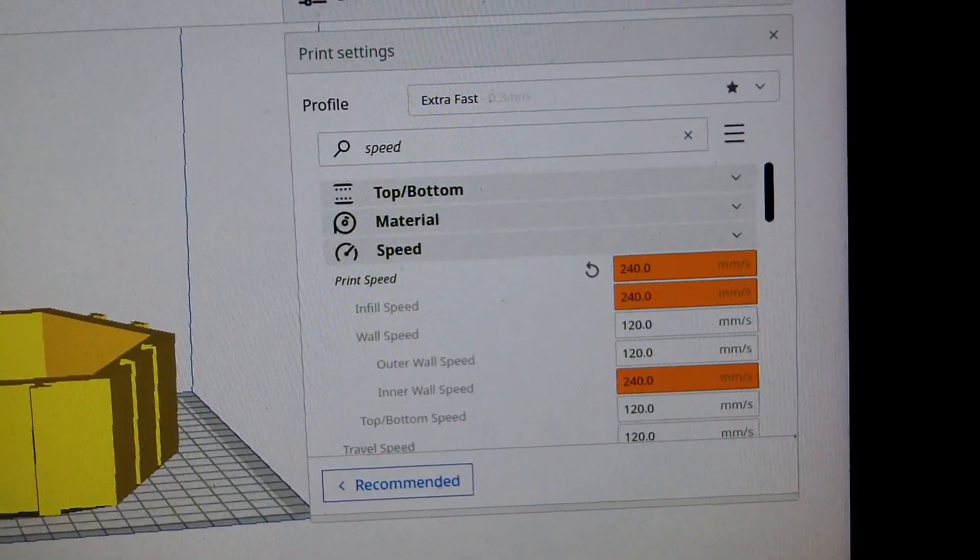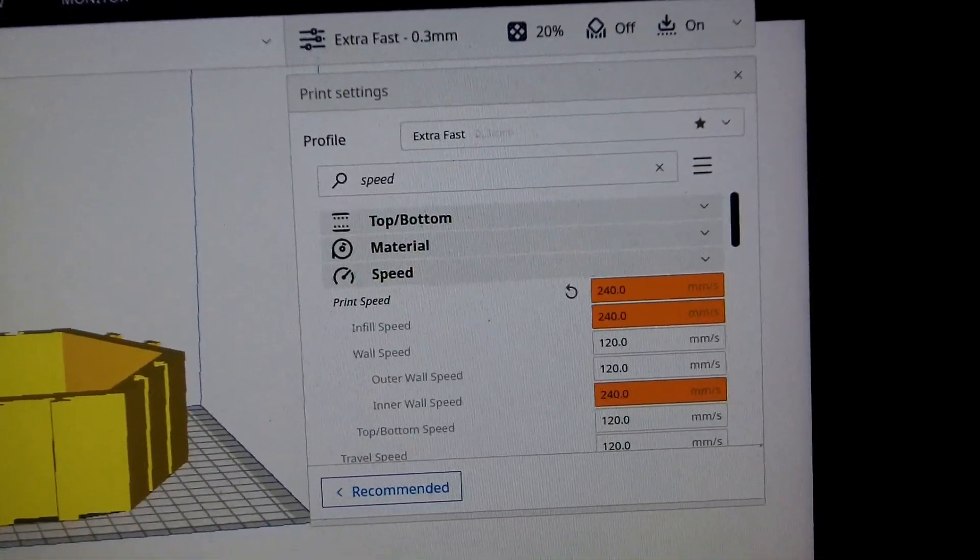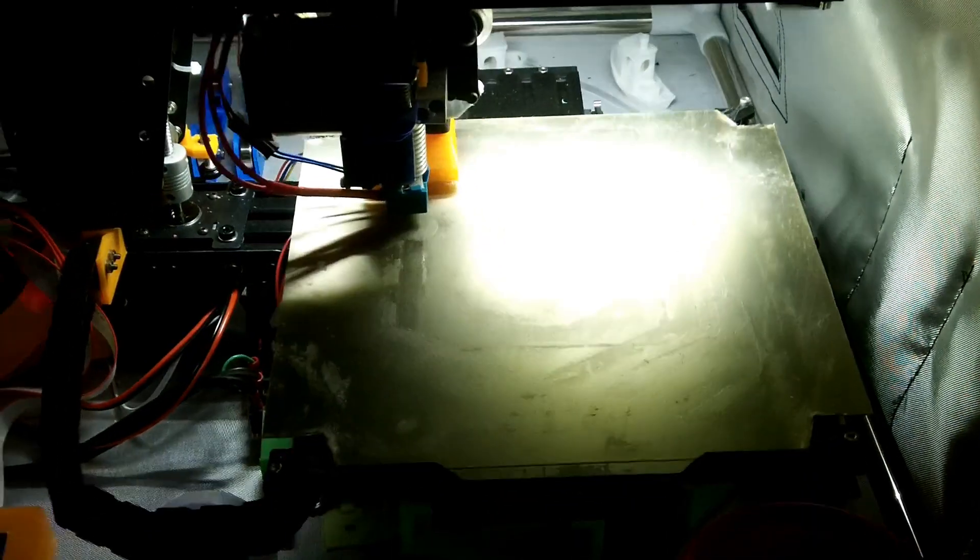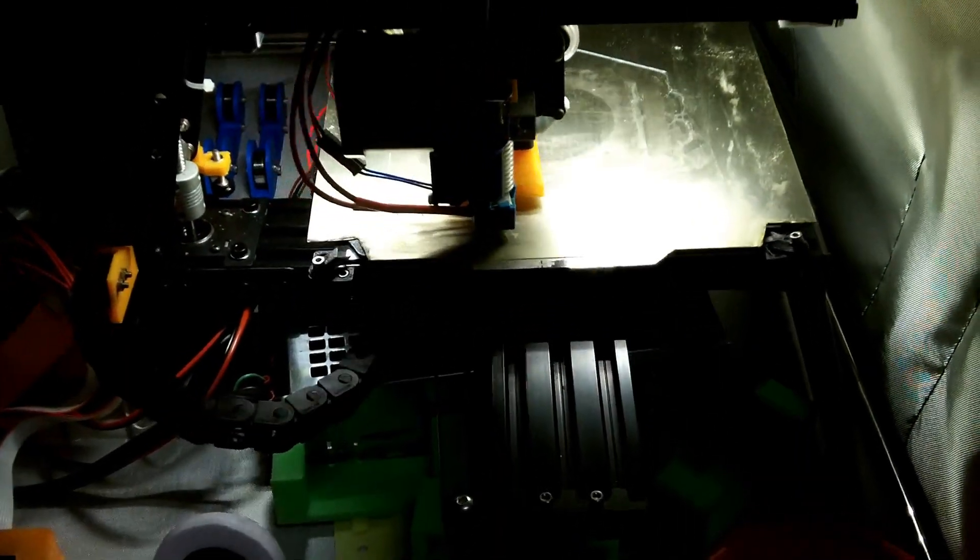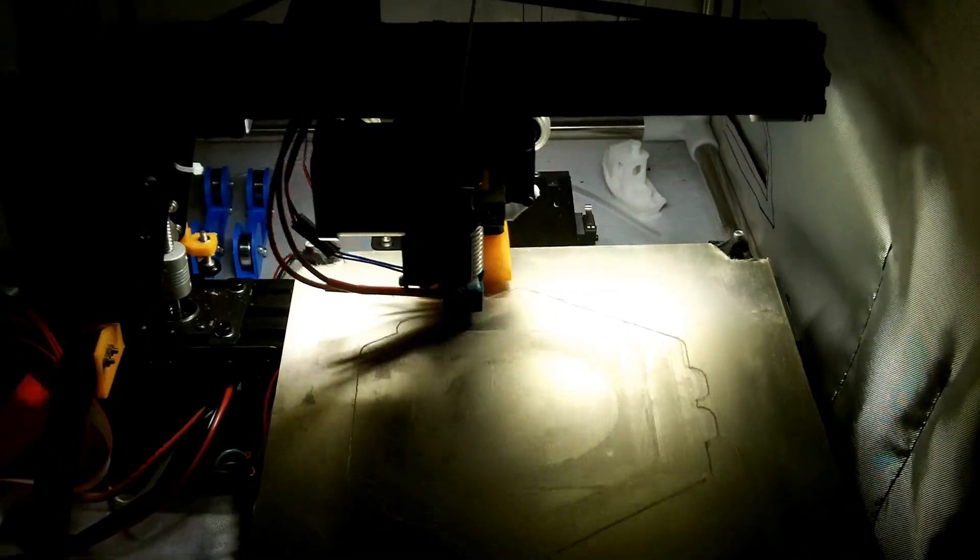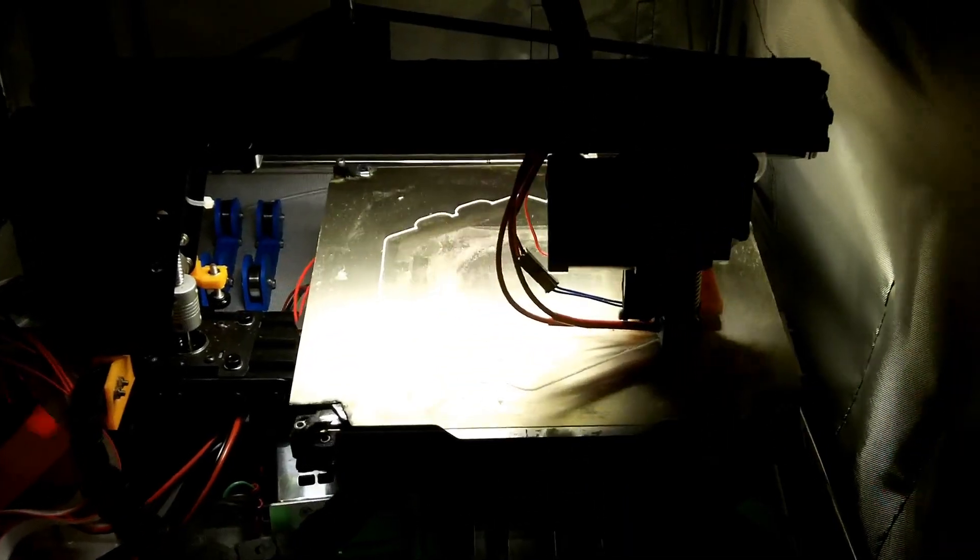I turned my speed up to 240 and I'm getting orange warning boxes here. I've set this thing to 240mm a second. Obviously it can't get up to that except in really long stretches. But it says it's going to take about 3 hours to finish.